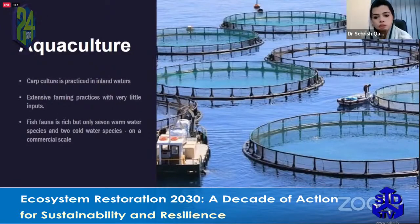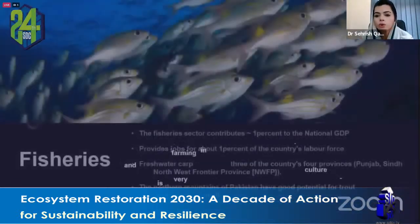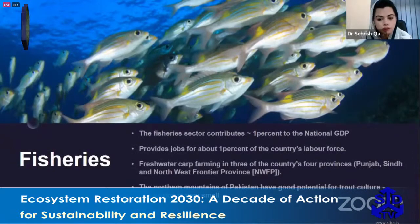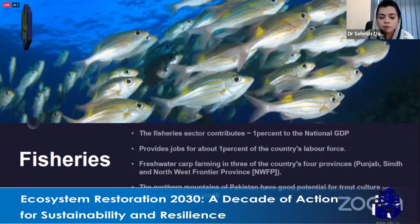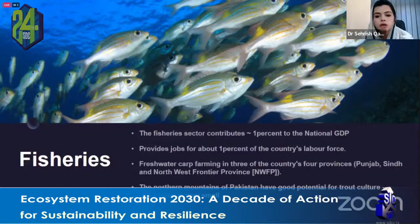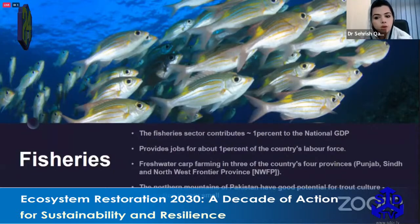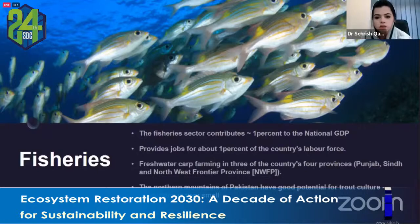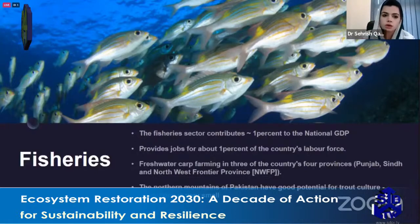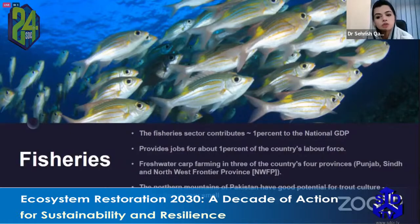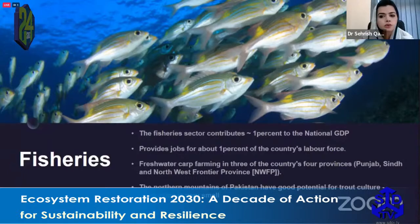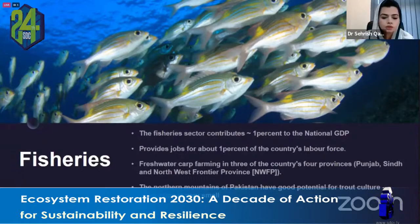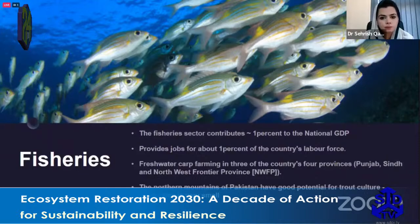The fisheries sector contributes only about 1 percent of the country's GDP and provides jobs for about 1 percent of the labor force — which can potentially be increased tenfold according to the CTS report. Freshwater carp farming is the major aquaculture activity in Punjab and Khyber Pakhtunkhwa. Pakistan's northern mountains have good potential for trout culture but production remains very small due to low technological advancement and lack of equipment.